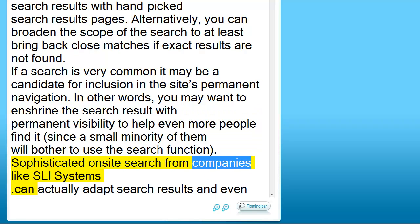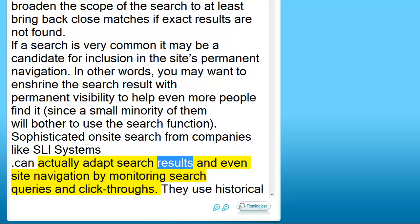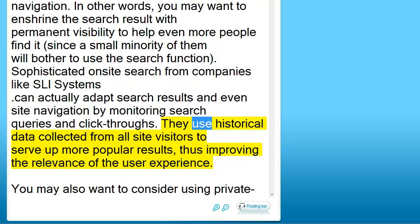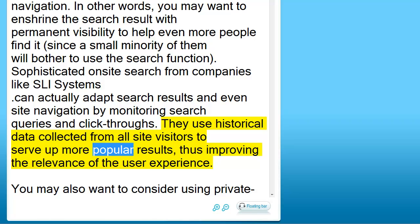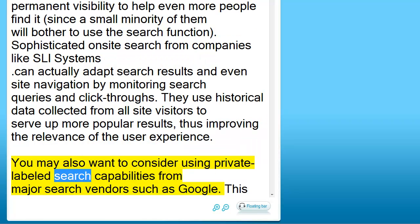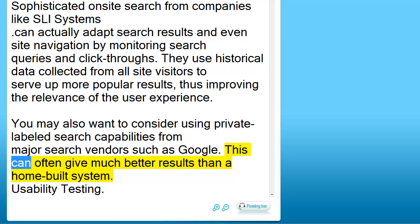Sophisticated on-site search from companies like SLI Systems can actually adapt search results and even site navigation by monitoring search queries and click-throughs. They use historical data collected from all site visitors to serve up more popular results, thus improving the relevance of the user experience. You may also want to consider using private label search capabilities from major search vendors such as Google. This can often give much better results than a home-built system.